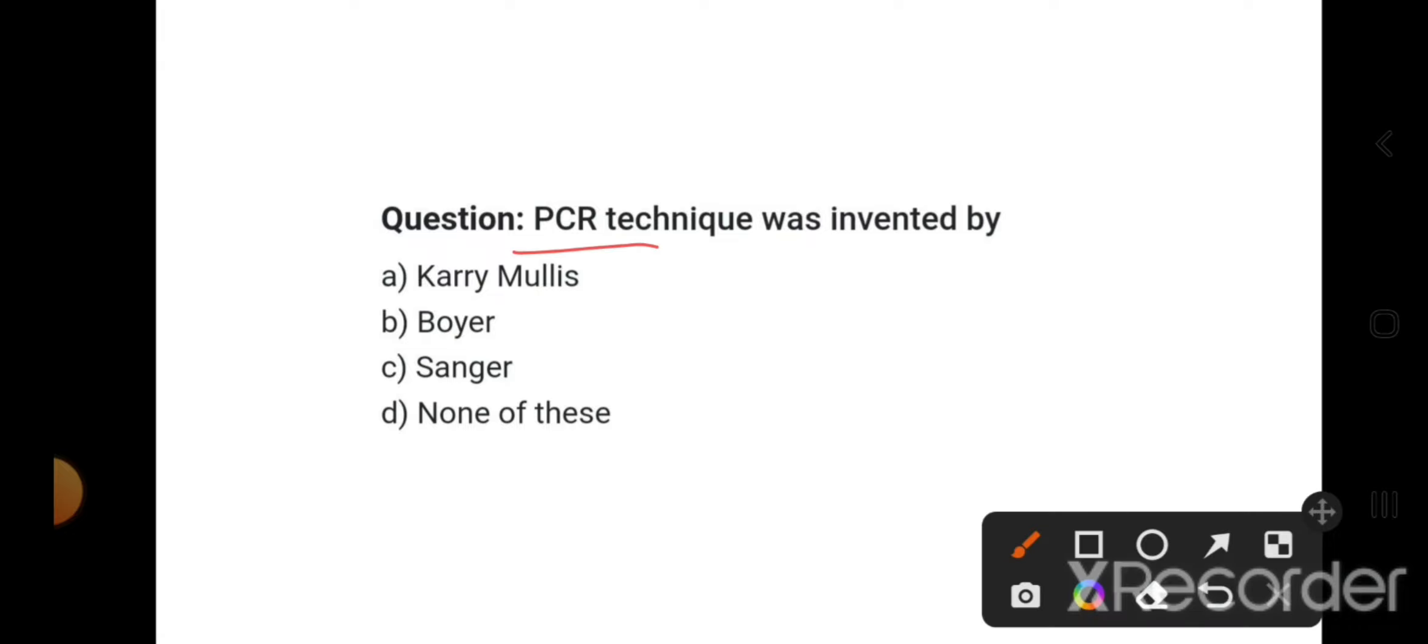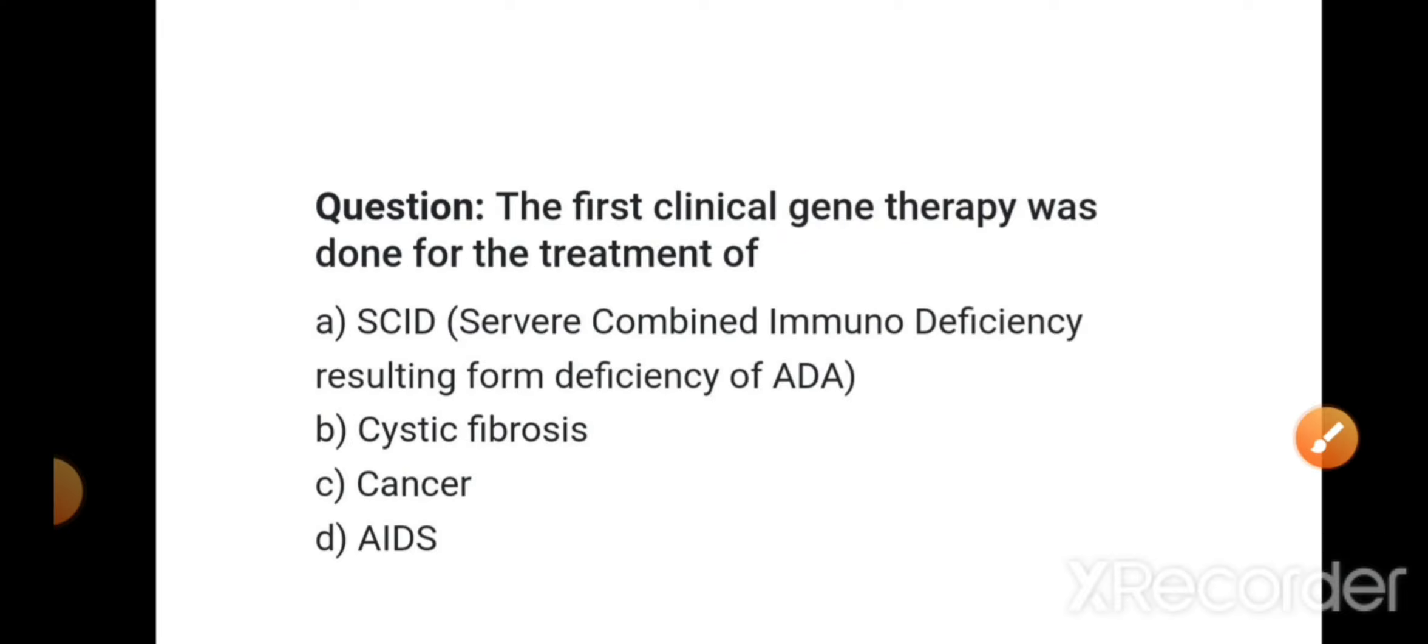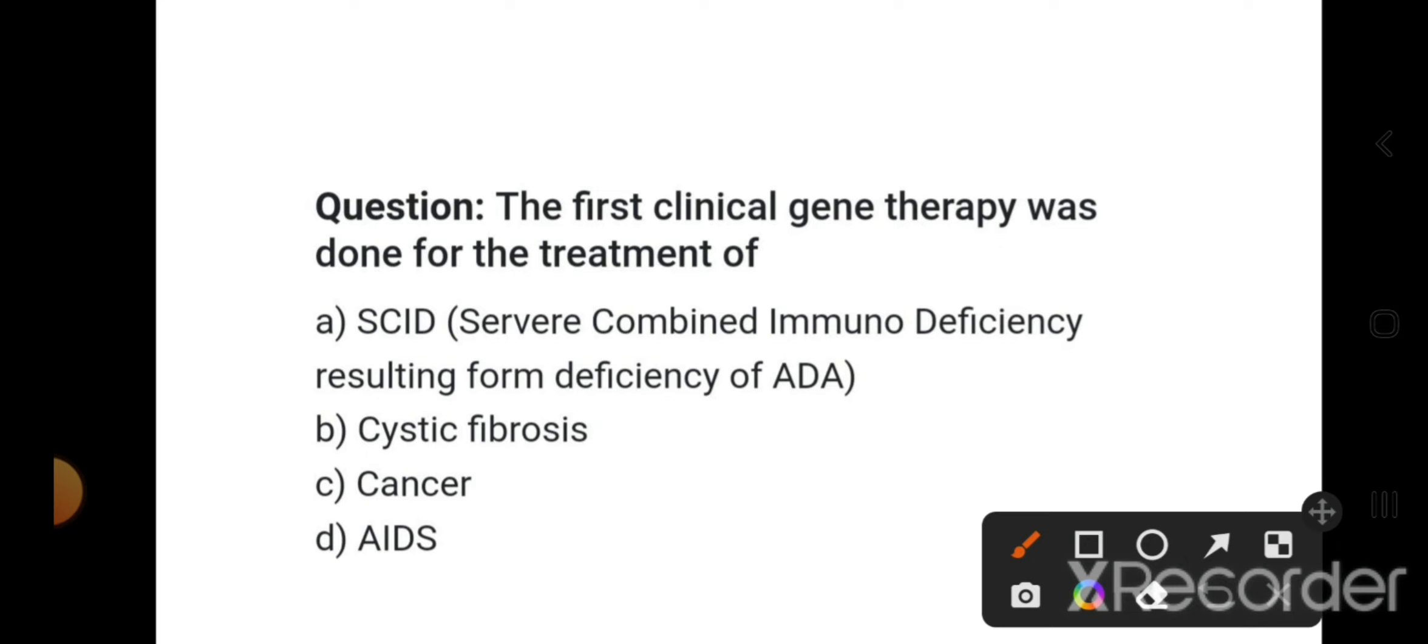PCR technique, which means Polymerase Chain Reaction, was invented by Kary Mullis. The first clinical gene therapy was done for the treatment of SCID - Severe Combined Immunodeficiency - resulting from the deficiency of ADA, which means Adenosine Deaminase. This enzyme was defective in patients and is very important for the maturation of lymphocytes. Normal gene was transferred, and thus this is the first clinical example.